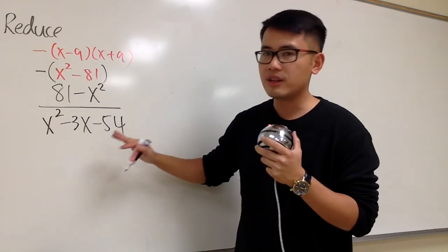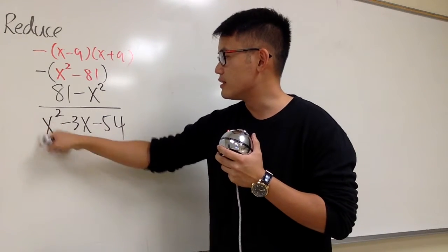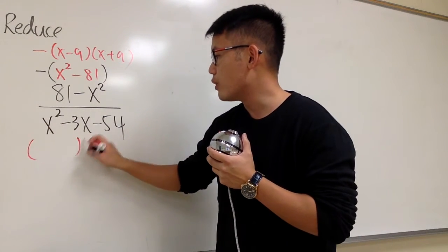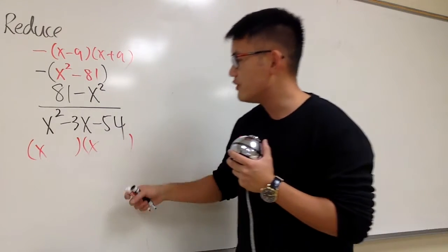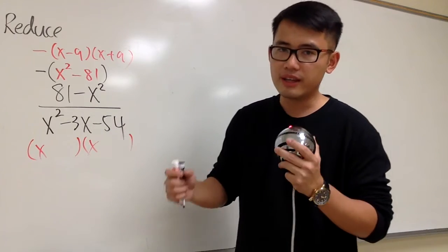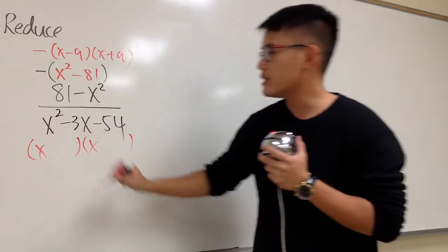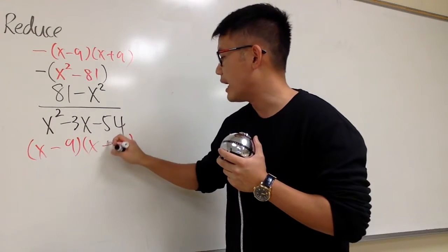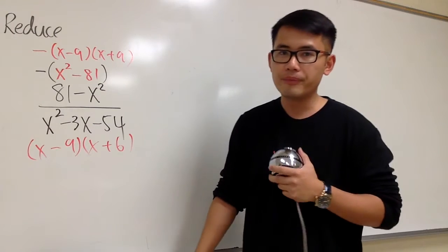And now, we are going to factor out this denominator. And we have x squared. This is 1. So that's good, because we know we are going to have x times x. And now, what times what gives us negative 54? And together, they add up to negative 3. The correct combination is negative 9, positive 6. And the order on how to put them down doesn't matter.